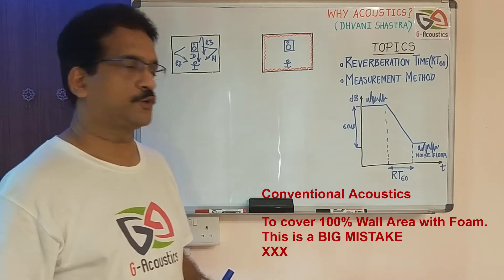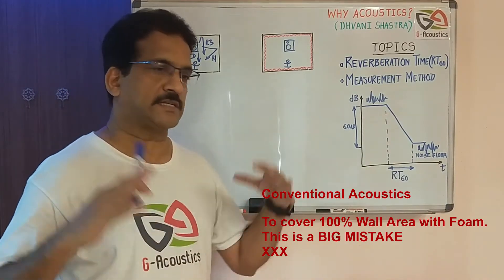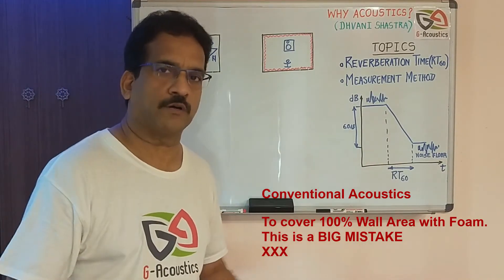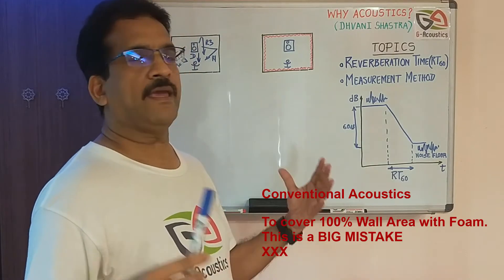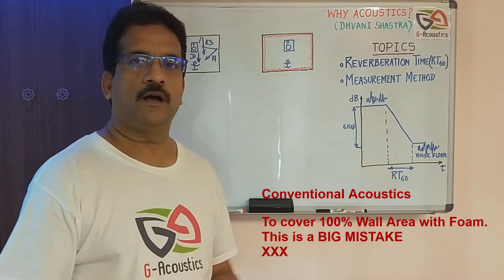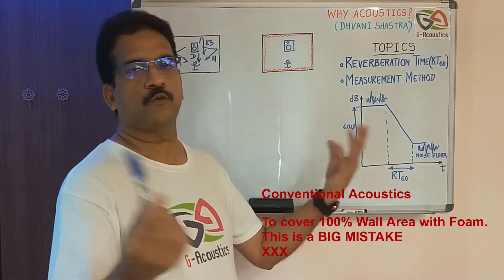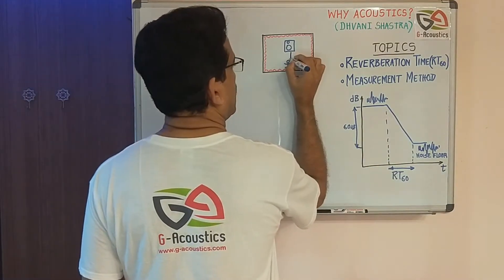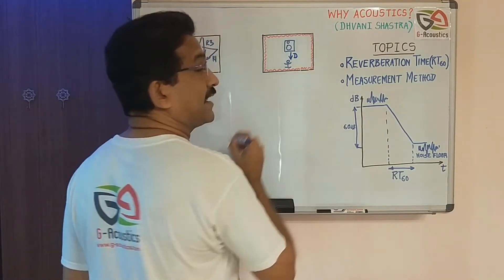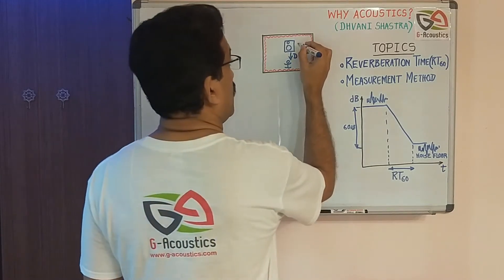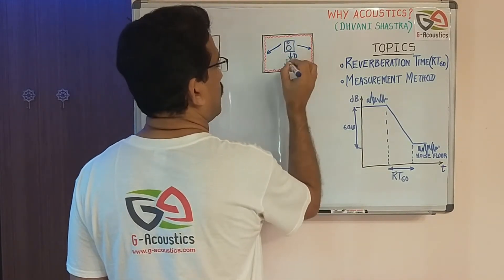The conventional method people use is to cover the wall. They say 'I need to do acoustics for this room' and put absorption material around the room. Most of the sound you listen to is only the direct sound, and the reflected sound gets absorbed.